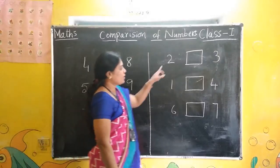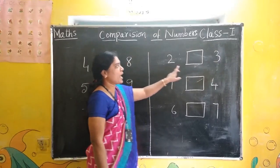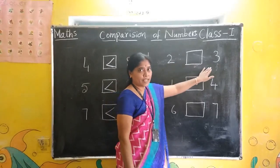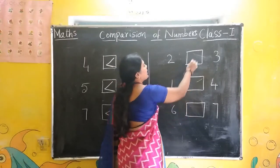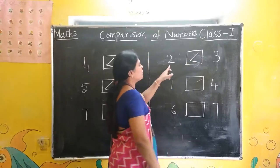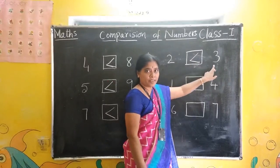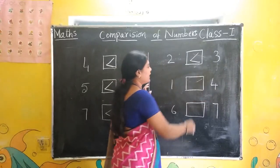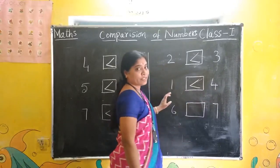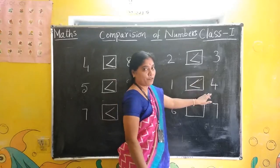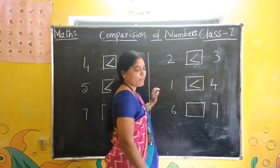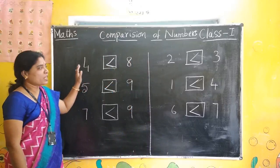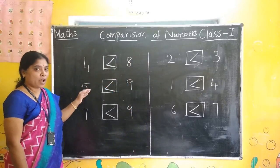Next: 2 and 3. Which one is the biggest number? 3. So compare these numbers and write the symbol. 2 is less than 3. Next: 1 is less than 4. Next: 6, 7 — 6 is less than 7. All these are less than 8.